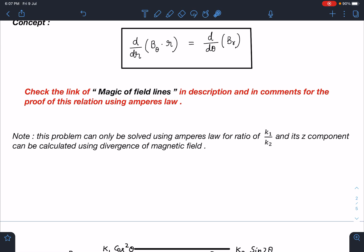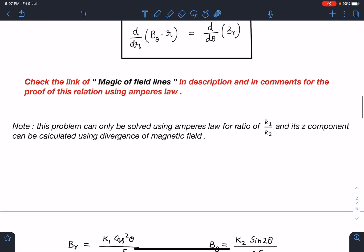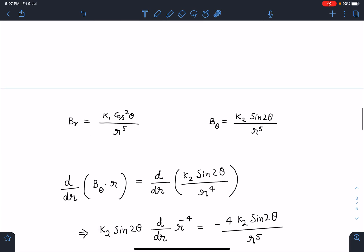And note here, this problem can only be solved using Ampere's law for the ratio of k1 by k2. Its z component can be calculated using divergence of magnetic field. So as long as k1 by k2 ratio is concerned here, it will only be solved by Ampere's law and we cannot apply divergence logic because we don't know the z component here.